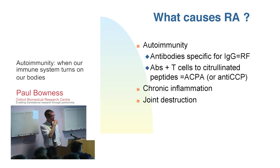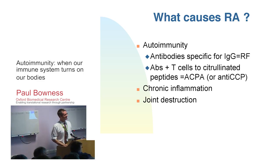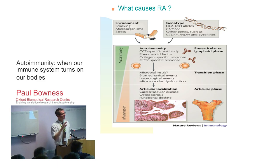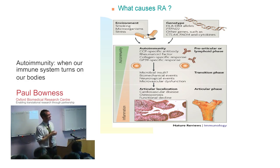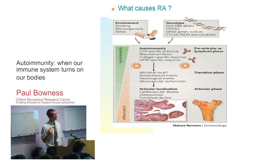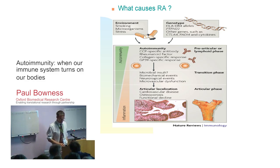Most of our treatments are designed at getting rid of this synovitis or reducing the amount of inflammation. What we can't do yet is actually stop it happening in the first place or get rid of it completely. We think the reason it's so hard to treat is because the body is attacking itself. Once the dogs and the policewomen and men have decided to get rid of something, they will go on doing it. If it's our own body, we can't get rid of our own body, so the inflammation continues. But what we don't know is what really triggers it.